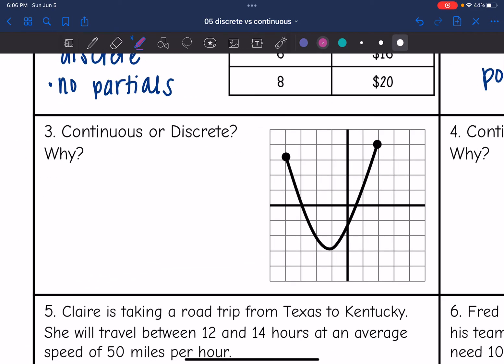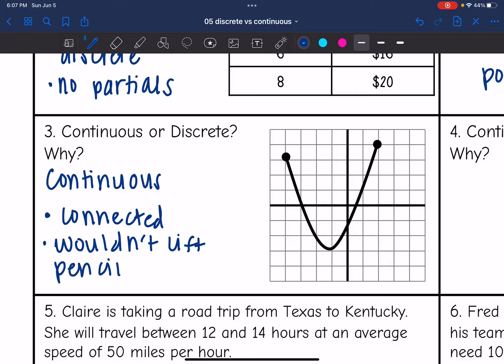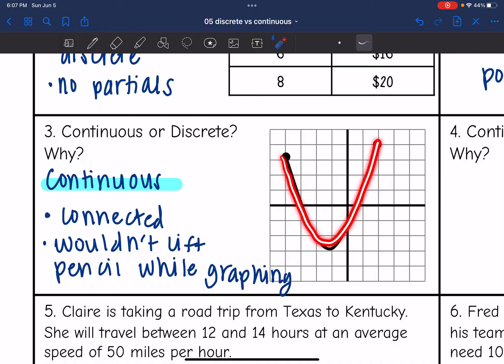Okay, next one. If I were to trace my pencil when drawing this graph, I would not be lifting up my pencil at all. This is connected. So this is a continuous graph because it is connected and you wouldn't lift your pencil when graphing. So continuous is where we do not lift up our pencil when graphing it. It's all connected.